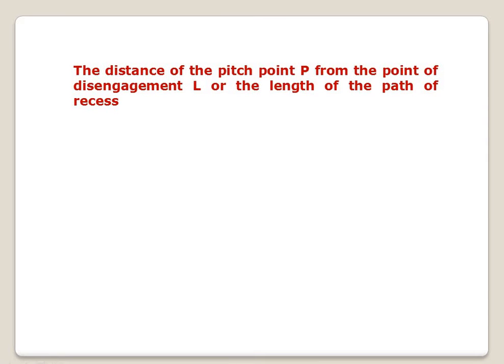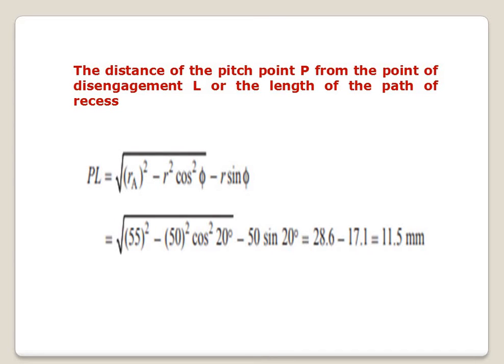The length of path of recess, PL, equals the square root of (small rA squared minus small r squared times cos squared phi) minus small r times sin phi. Substituting: square root of (55 squared minus 50 squared times cos squared 20) minus 50 times sin 20. The square root term equals 28.6, minus 17.1. So PL, the path of recess, equals 11.5 mm.